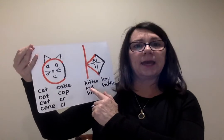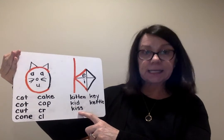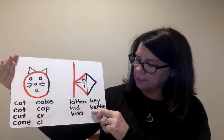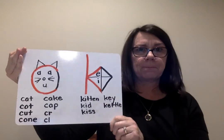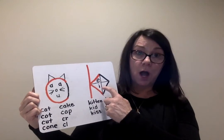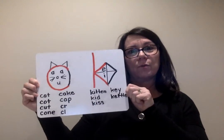Next one is kettle — K-E-T-T-L-E. So we're going to have words right here: kitten — K-I-T-T-E-N, kid — K-I-D, kiss — K-I-S-S, key — K-E-Y, and kettle. So if the second sound is short or long E or I, use K.